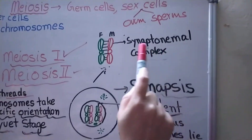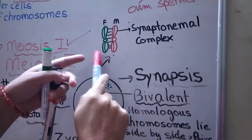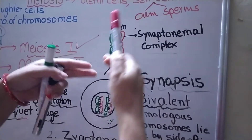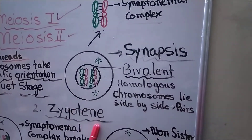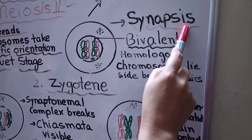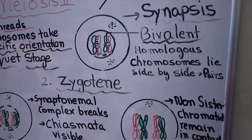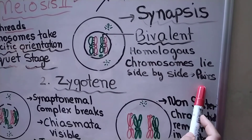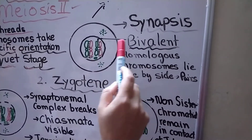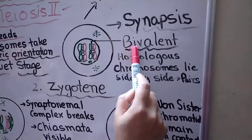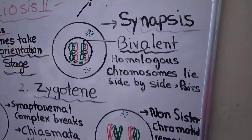This synaptonemal complex is necessary so that the chromosomes — one from the mother and one from the father — stay together and don't float around in the nucleoplasm. So in zygotene, synapsis occurs: homologous chromosomes come to lie side by side in pairs, one from the father and the other from the mother. This homologous pair of chromosomes also forms a bivalent — bivalent itself means a pair of homologous chromosomes.